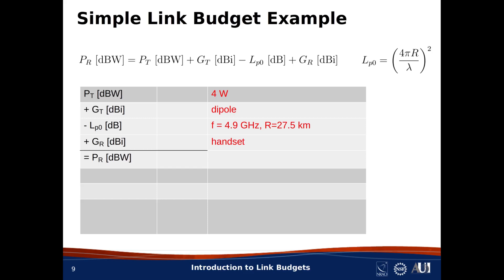I'm going to consider a hypothetical land mobile radio system operating at 4.9 GHz. For what it's worth, 4.9 GHz is a bona fide frequency band for such systems, and so this could, in principle, be a real system. Now, we're set up to study free space propagation. That's probably no problem, as long as all the antennas are high up above the ground, and the terrain is relatively flat, and there's negligible multipath from terrain and buildings.